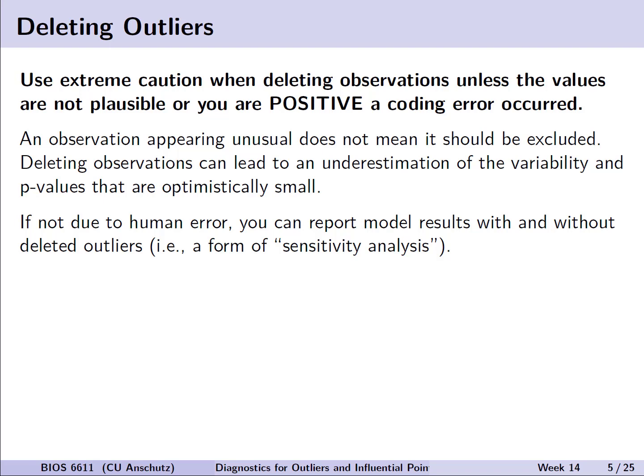Now again, going back to deleting outliers. In practice, you should use extreme caution whenever you're doing actual analyses and considering deleting data. The only reason I would strongly consider deleting data is if the values are completely not plausible and you're positive a coding error occurred. An observation appearing unusual doesn't necessarily mean it should be excluded. Deleting observations can lead to issues such as underestimation of the true variability and p-values that are optimistically small and potentially misleading. If the error is not due to human error, you could potentially consider reporting model results with and without the deleted outliers. This could be a form of sensitivity analysis.